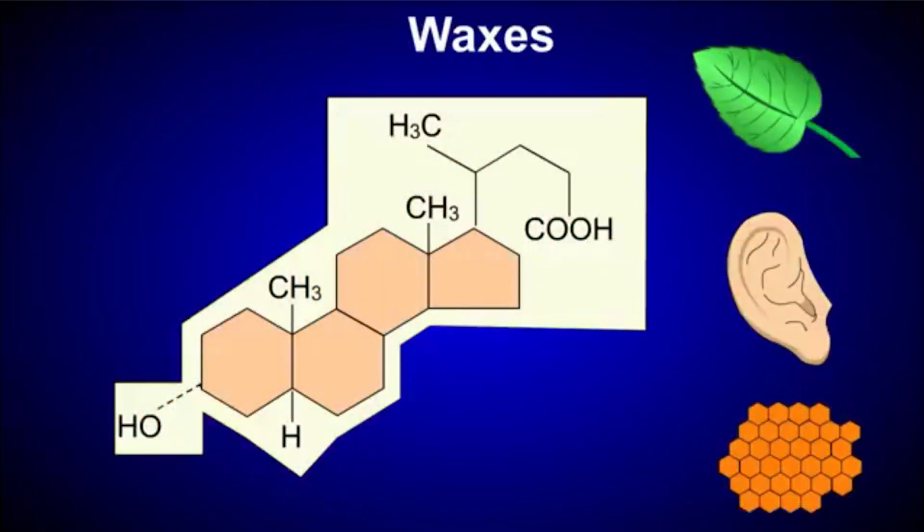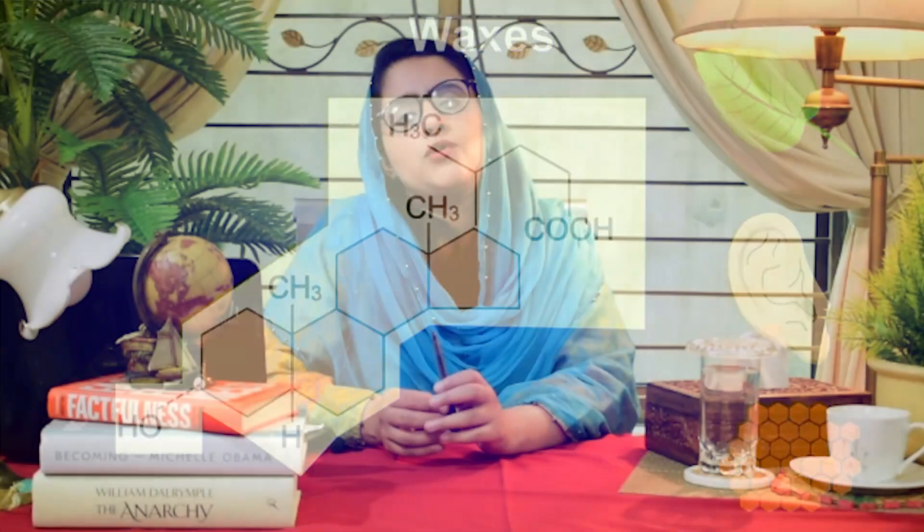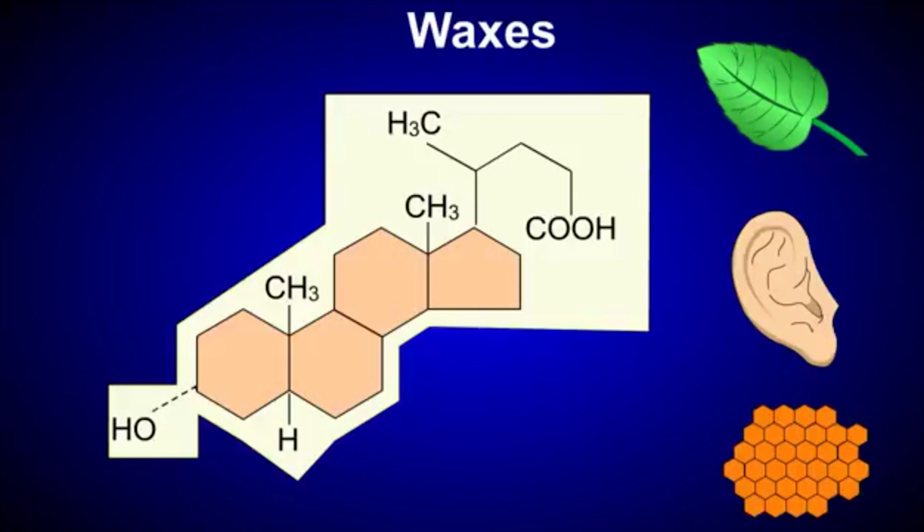Now we are going to waxes. Waxes are widely abundant in nature. They are found in different structures such as plant leaves and insect cuticles. They provide protection and act as a water barrier, preventing water evaporation from surfaces.